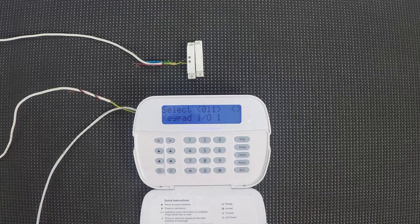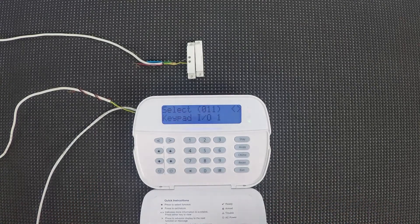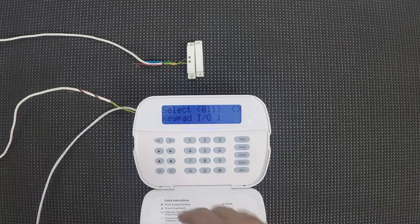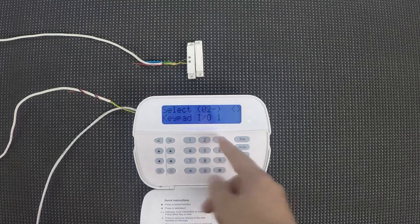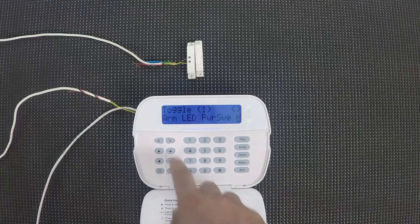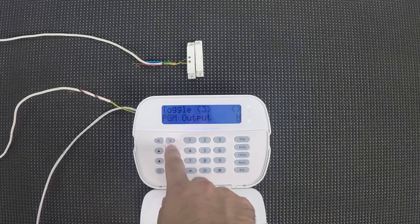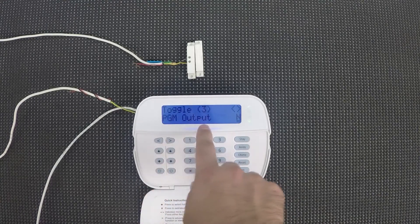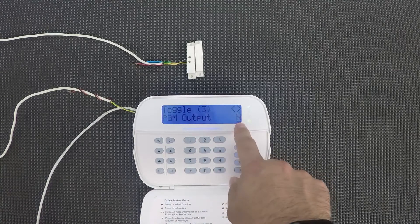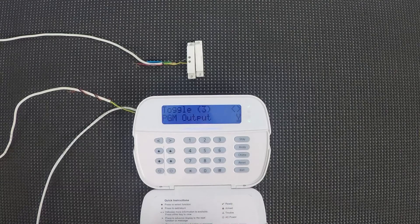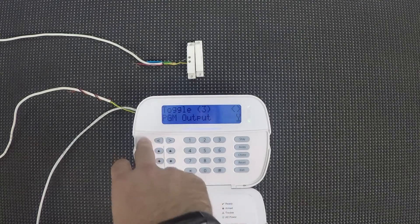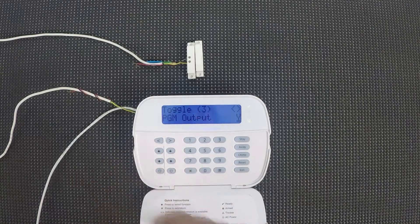So now that that's done, if you're doing a zone from default programming, that's all you need to do. If you're doing a PGM, you'll need to go to 023. This is keypad option three, and you'll scroll over to toggle three. This is PGM output. It's set as no by default. If you need to change it to yes, you'll just hit star, and that's going to make the fifth terminal act as a PGM instead of a zone.